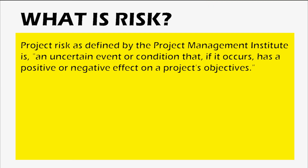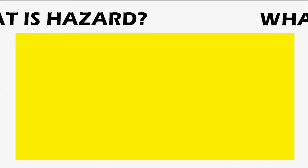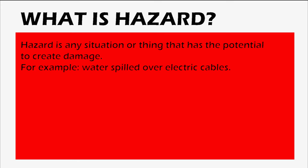Project risk, as defined by the Project Management Institute, is: an uncertain event or condition that, if it occurs, has a positive or negative effect on a project's objectives. A hazard is any situation or thing that has the potential to create damage — for example, water spilled over electric cables.